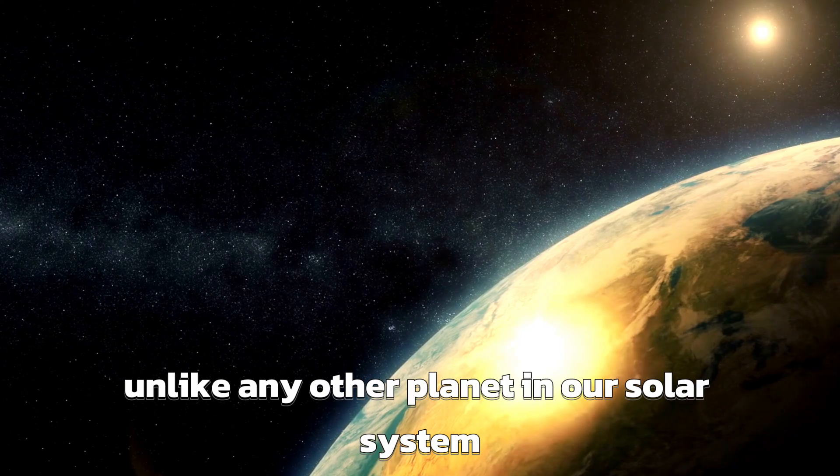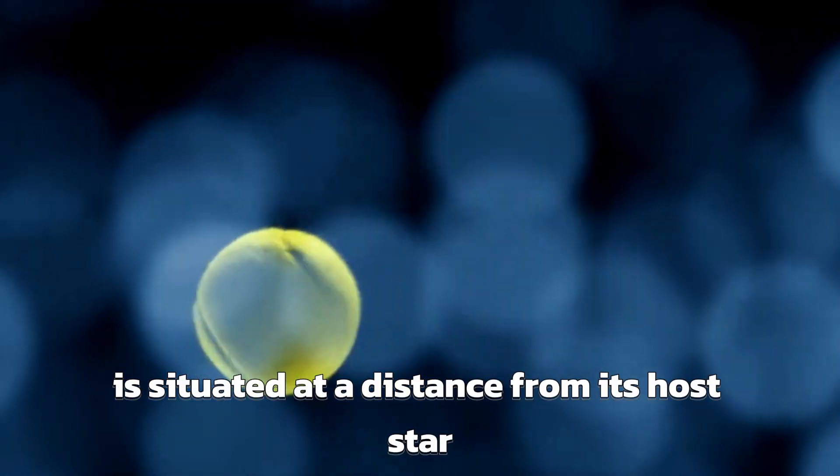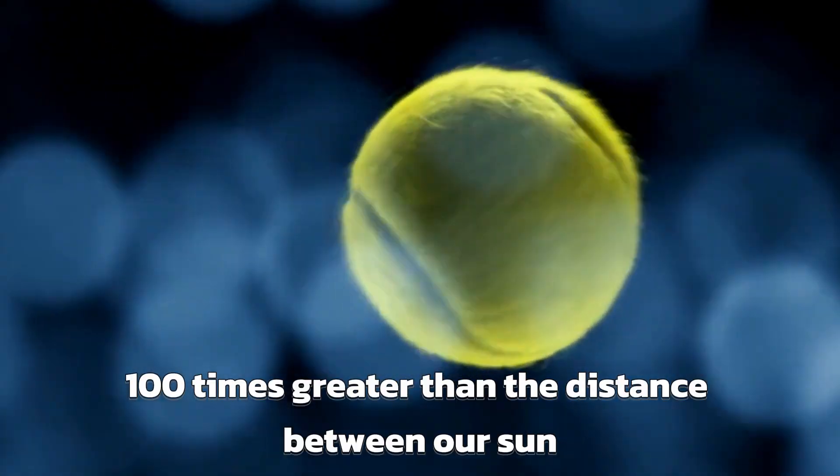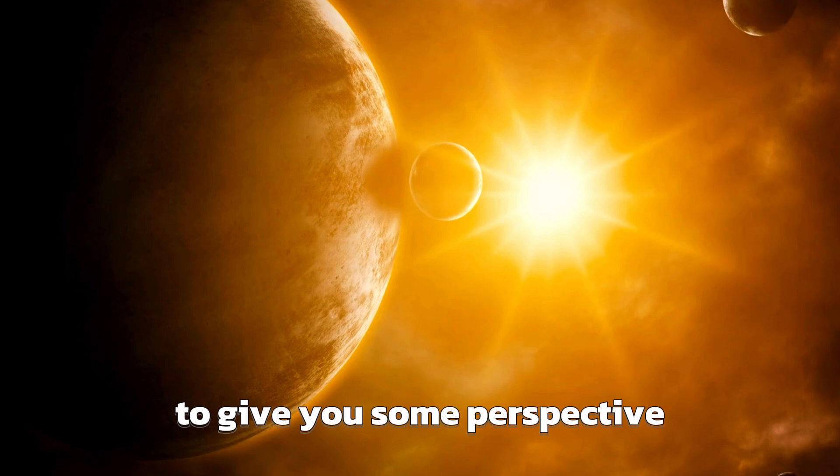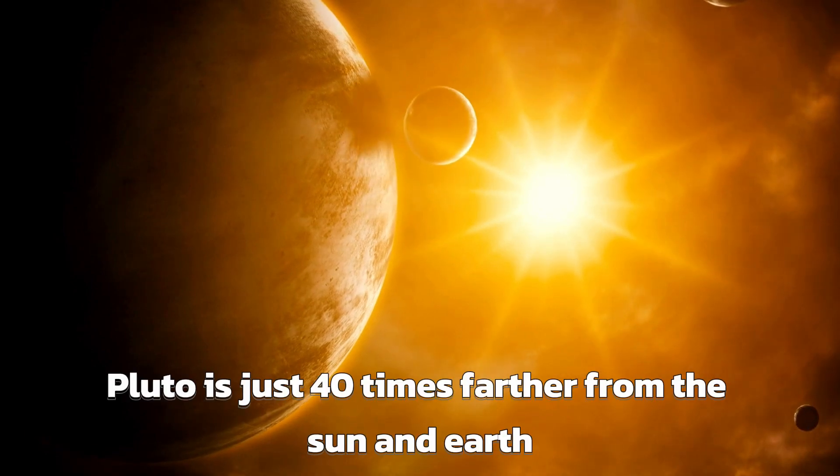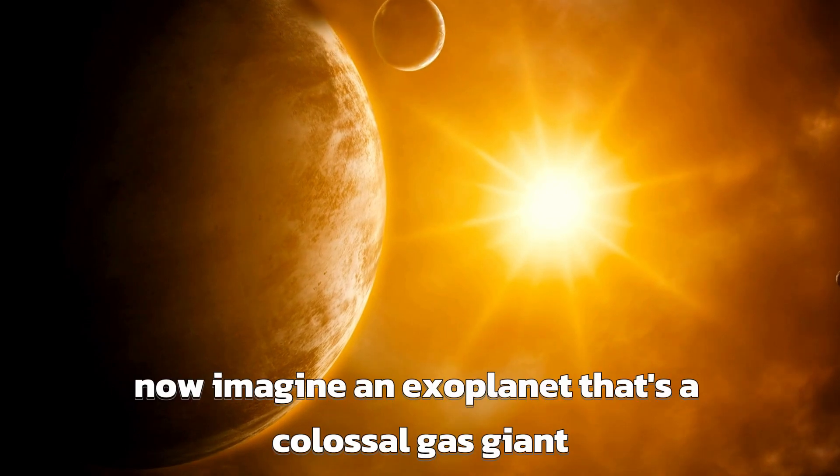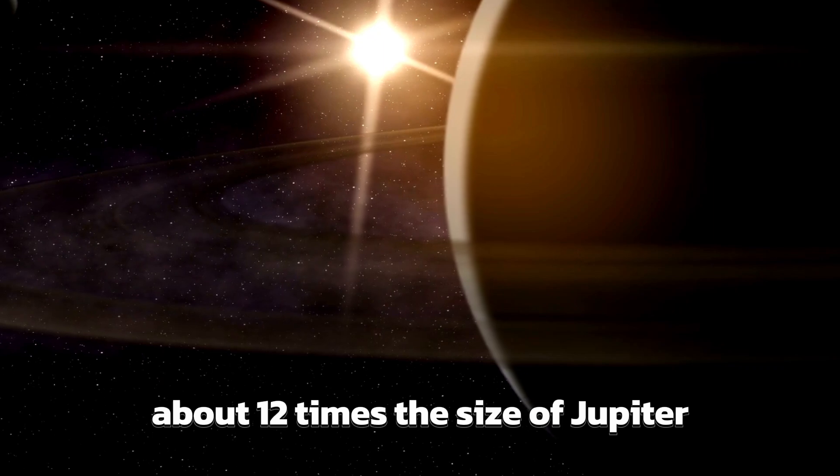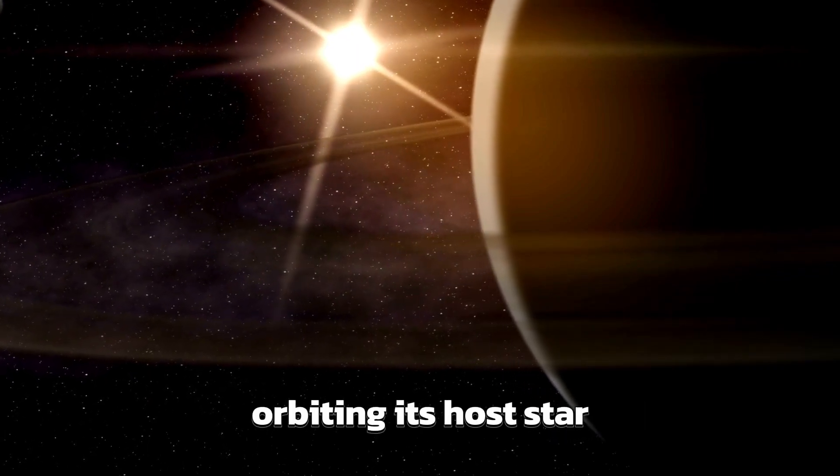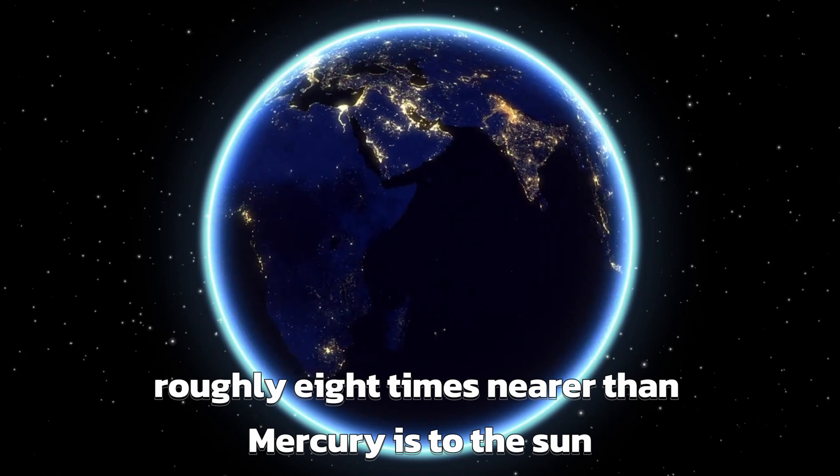Unlike any other planet in our solar system, HIP-65426b is situated at a distance from its host star that is 100 times greater than the distance between our Sun and Earth. To give you some perspective, Pluto is just 40 times farther from the Sun than Earth. Now, imagine an exoplanet that's a colossal gas giant, about 12 times the size of Jupiter, orbiting its host star at an astonishingly close distance, roughly 8 times nearer than Mercury is to the Sun.